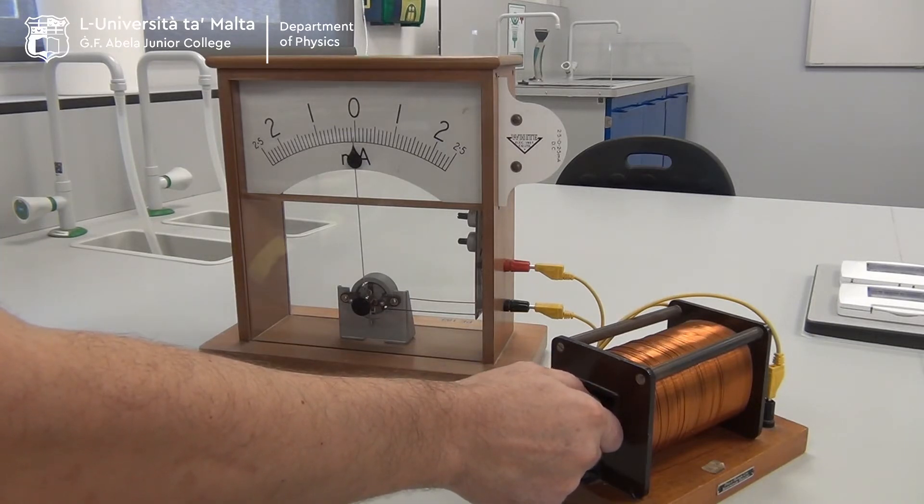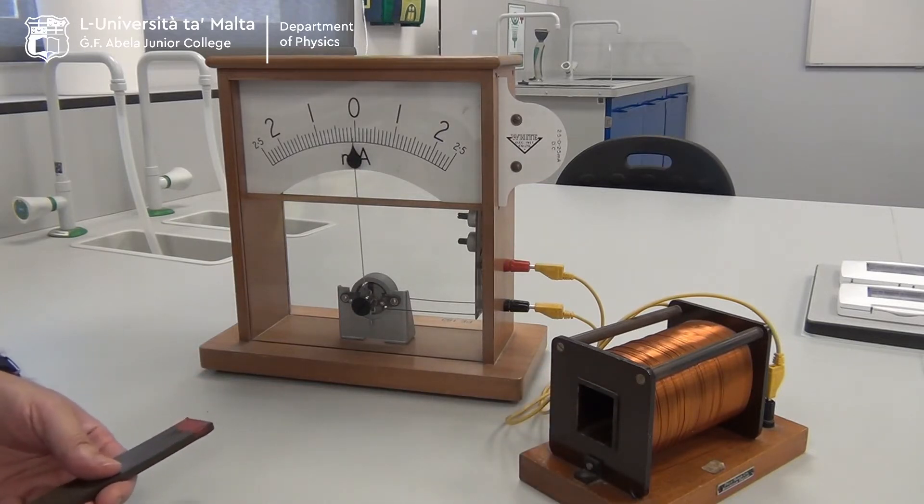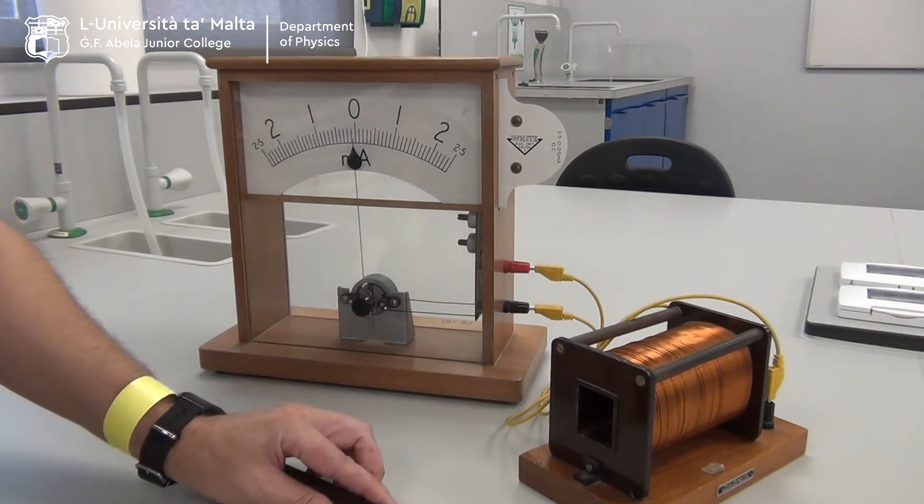As I pull the magnet out faster, the deflection will be bigger than before and to the left. This demonstrates Faraday's law and Lenz's law together.